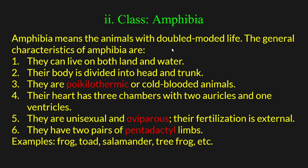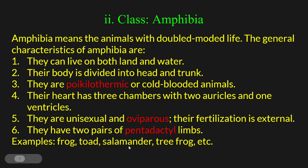Next is class Amphibia. These animals have a double-mode life — they live both on land and in water. Their body is divided into head and trunk. They are unisexual and oviparous, and their fertilization is external.